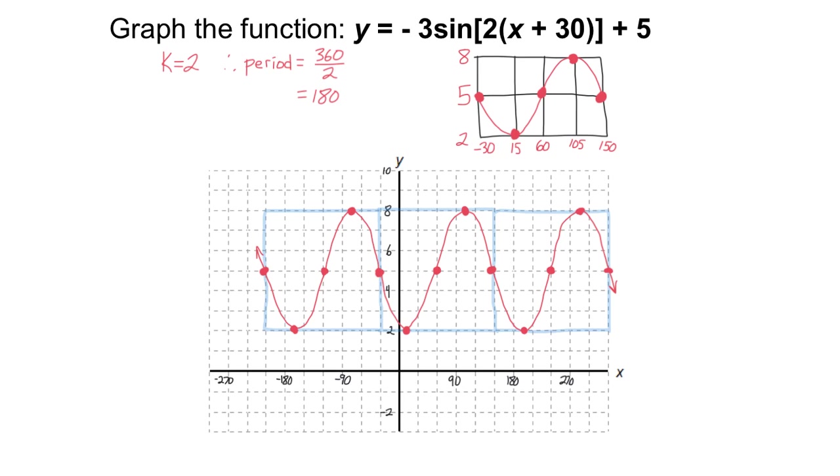So just remember how to pick out the important pieces of information. C for central axis. A for amplitude, to figure out your maximum and your minimum. The D value is your phase shift. It tells you which way you're shifting the start of your graph, left or right, and by how much. So this one was left 30, so I went to minus 30, left from zero. And the K value, you use that to figure out the period. So from your starting point to your ending point, how much do you have to increase?